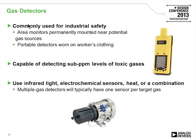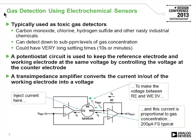Let's look at gas detectors. These are very popular in industrial environments primarily for safety, because workers typically will wear these on their clothes to detect the presence of poisonous gas. There are a wide variety of these types of gas detectors, but the ones we're going to look at work on an electrochemical principle and can be used to detect carbon monoxide, chlorine, hydrogen sulfide, and other gases.